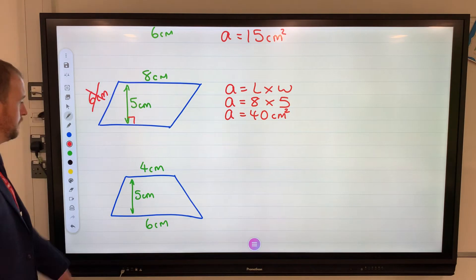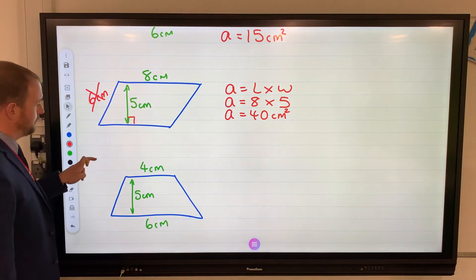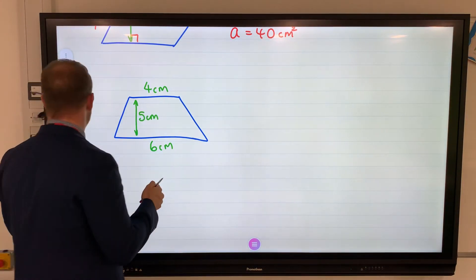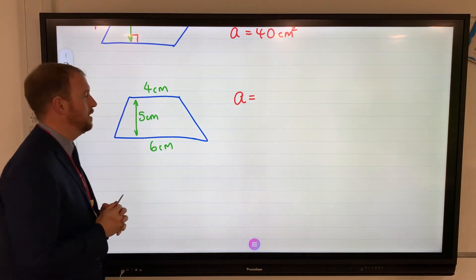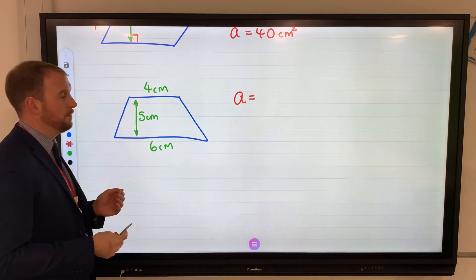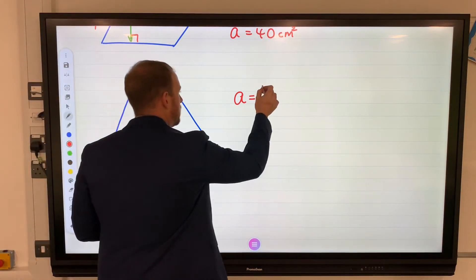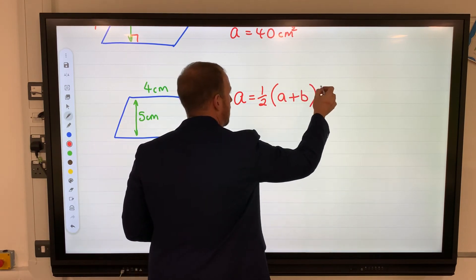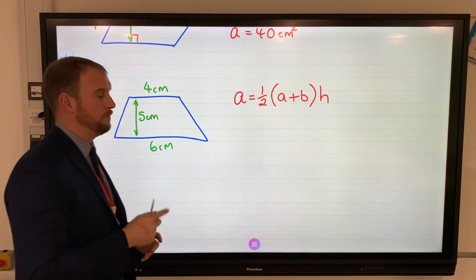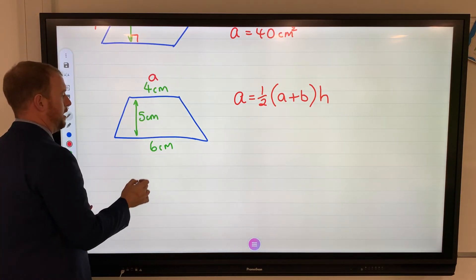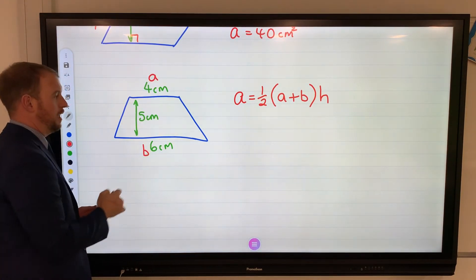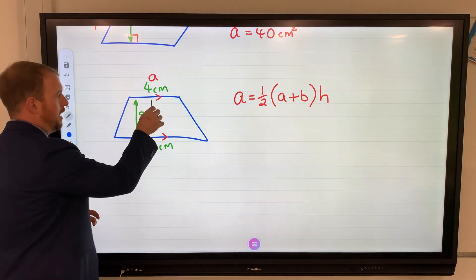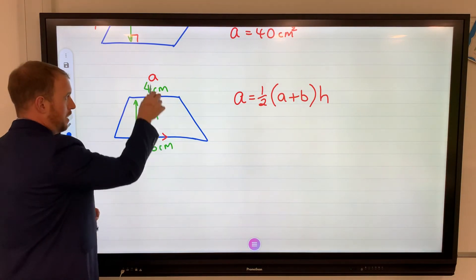Now this one is a hard one - this is a trapezium. A trapezium has an even more complicated formula. We need to half the total of a and b, bear with me, and then times that by the height. This number is the a, this one is the b. With a trapezium we have a pair of parallel lines, and these parallel lines are the a and b.